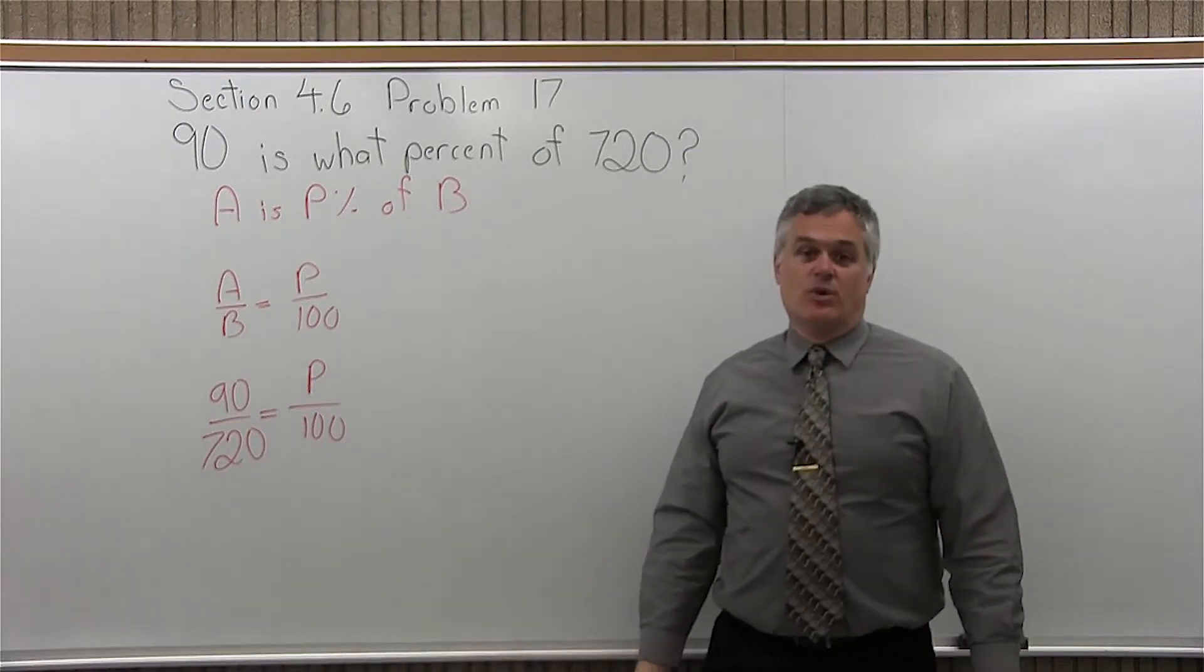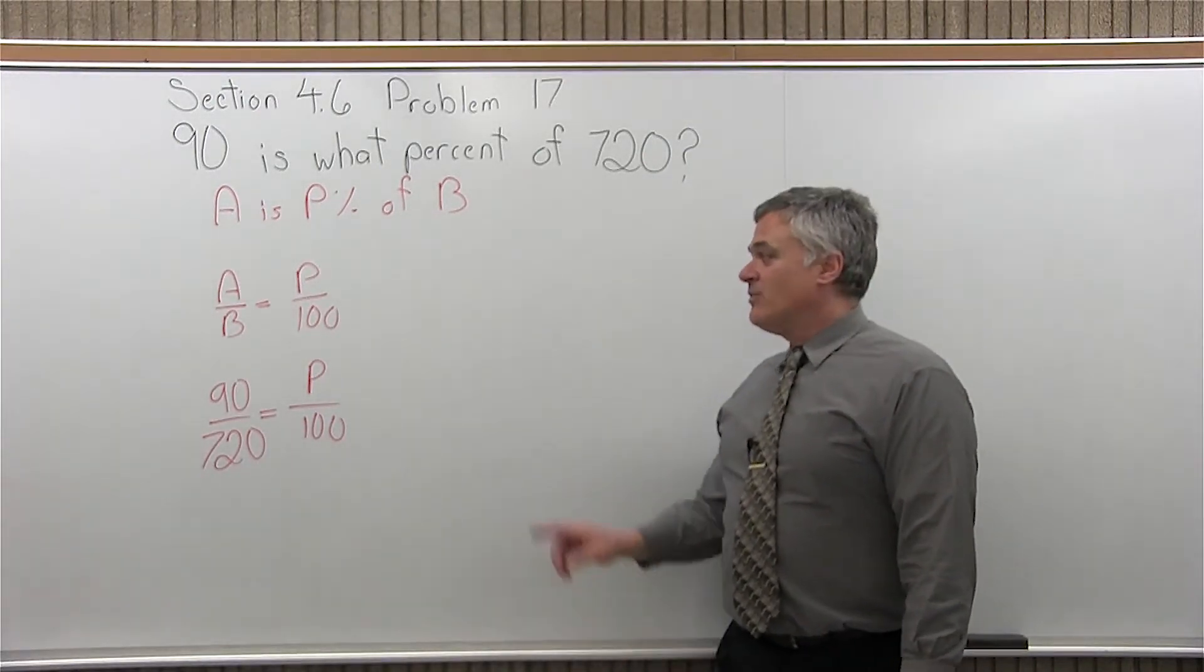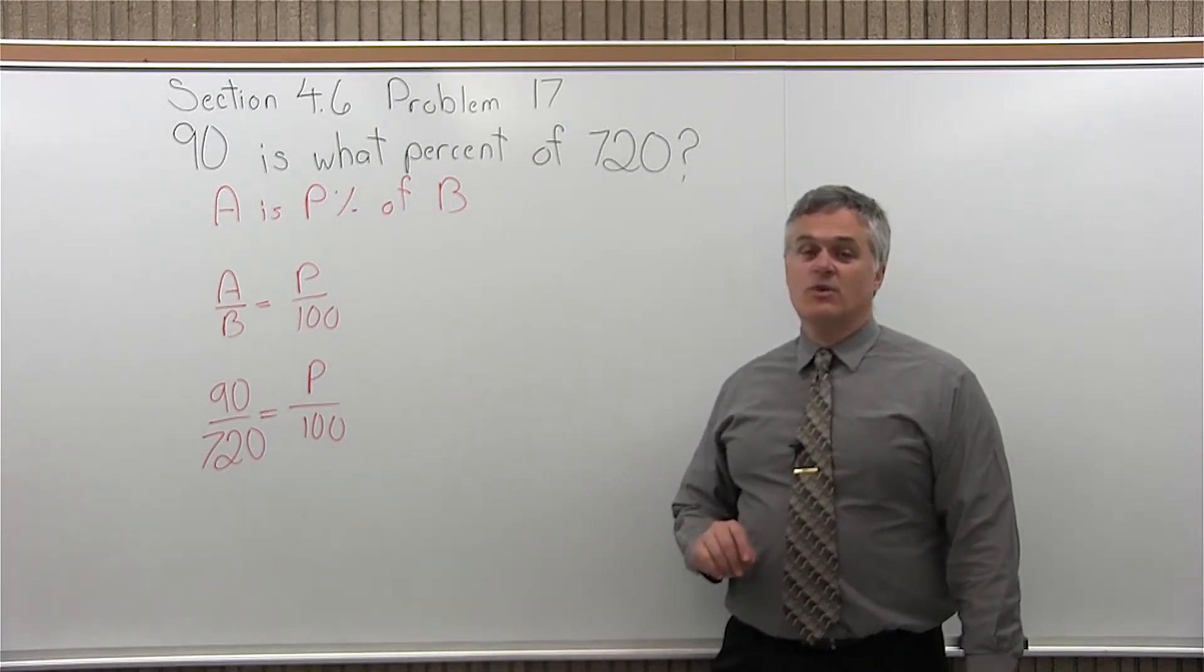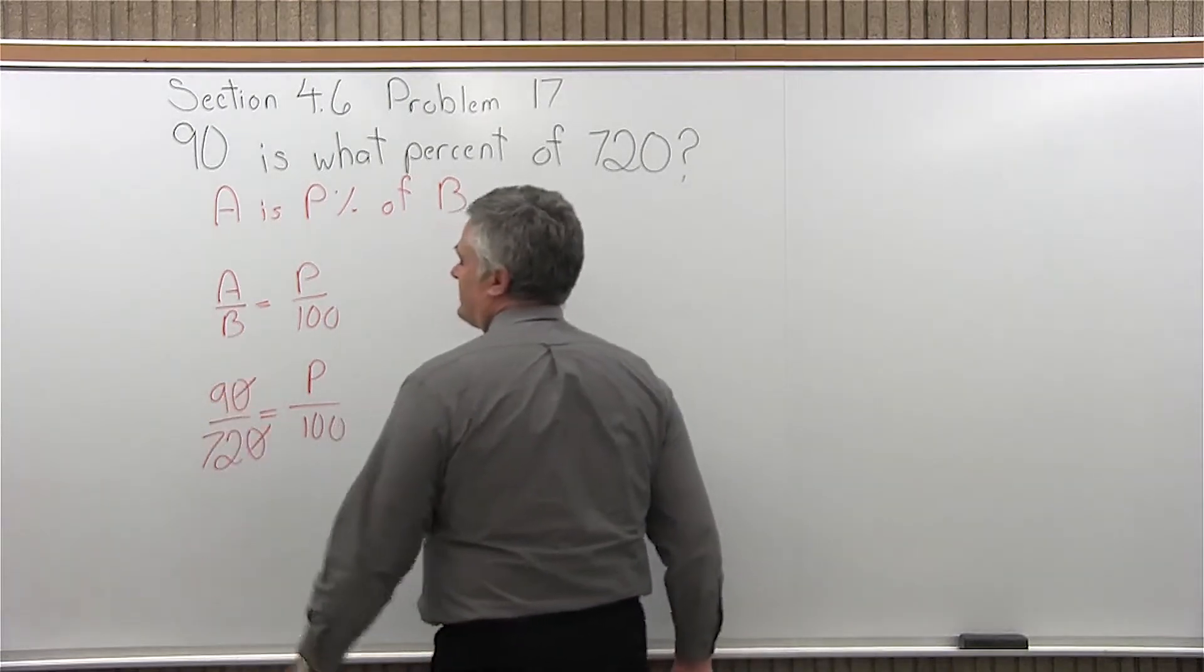So now we have an equation with one unknown. We can solve it when we cross multiply and divide. Now, you can get the answer just the way it's written. You can reduce if you want. You'll get the same answer either way.